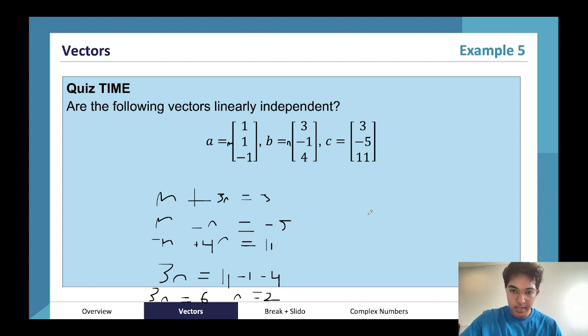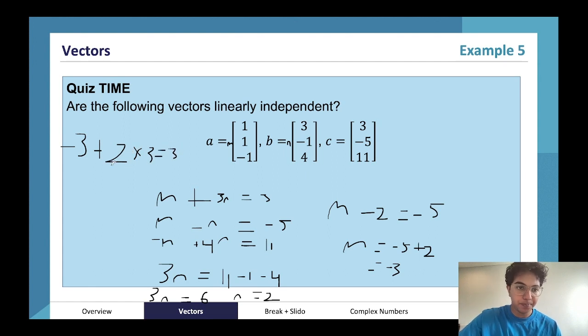Okay, cool. So then here I can do the same. Then m minus 2 is equal to minus 5, and then m is equal to minus 5 plus 2, which is equal to minus 3. The last step is to check if it's consistent with what we have here. So minus 3 plus 2 times 3 is equal to 3. Yes, this is true. But I'll work it out entirely anyway. So minus 3 plus 6 is equal to 3.